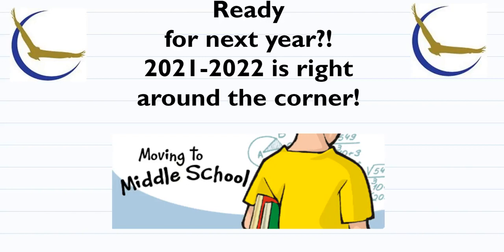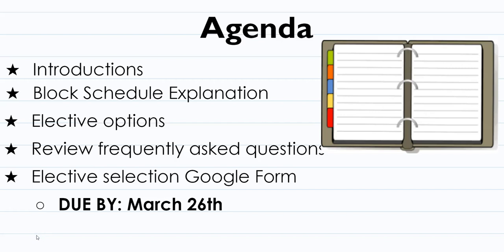Hello Best Flyers, it's Ms. Sapo here to go over with you your schedule and elective choices for the 2021-2022 school year. On our agenda today: introductions to your counselor, a block schedule explanation, elective options for next year, frequently asked questions, and links for the Google form. The Google form with your elective selection is due by March 26th, which is next Friday, so please do this ASAP.